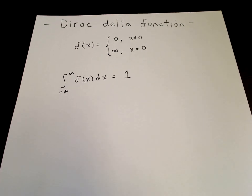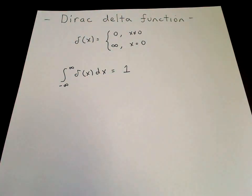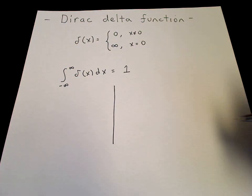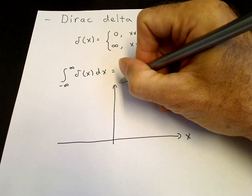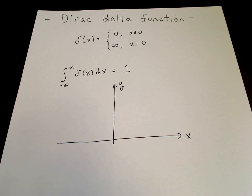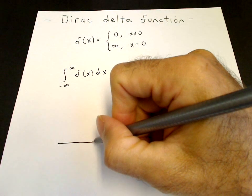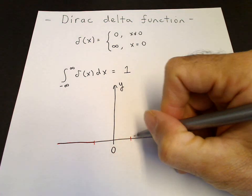So how do you get a delta function? There are several representations of a delta function. I can show you the simplest one, which comes from a step-up step-down function. If we draw an axis — here's x, we can call this axis y — then a simple implementation of the delta function: if this is the origin, 0, we can have a function which is 0 everywhere except for some region around the origin. We can make it symmetrical.